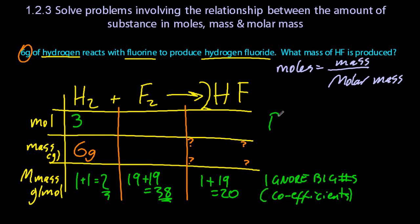Now the top line is the ratio line. So if you look at the numbers in the equation, 1, 1, and 2, that ratio has to be reflected in the moles, in the ratio line, so to speak. So 1 is to 3 as 1 is to 3 as 2 is to 6.